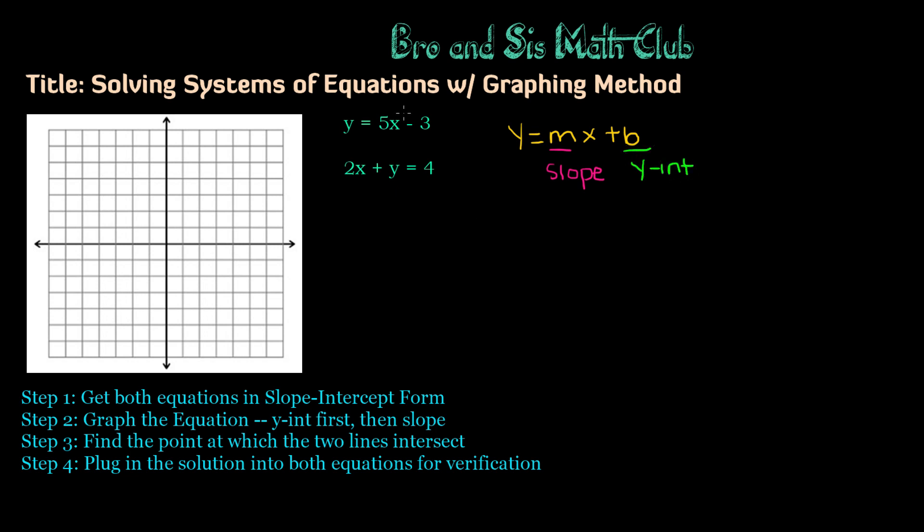As you can see, the very first equation, which is y equals 5x minus 3, is already in slope-intercept form. So all we need to do is turn the second equation, which is 2x plus y equals 4, into slope-intercept form. We can do that by simply moving the 2x onto the right-hand side. If we subtract 2x on both sides, we will get y equals negative 2x plus 4, which is in slope-intercept form.